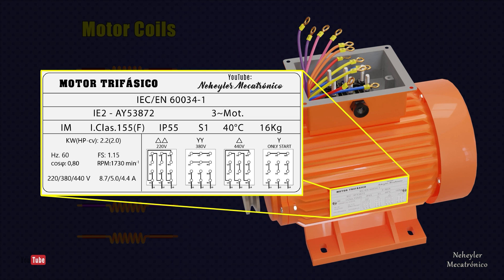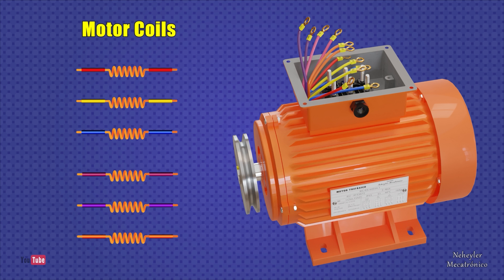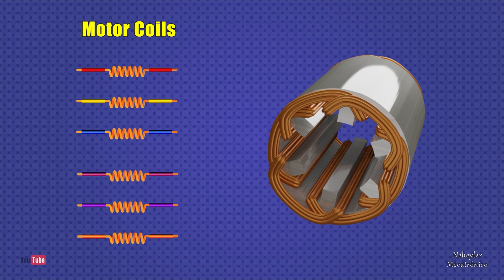To do this, you can make star connections or delta connections as indicated on the data plate of most electric motors. These electric motors are divided into 6 coils inside, from which 12 tips or terminals emerge to the outside, with which we can make different connection configurations depending on the need.